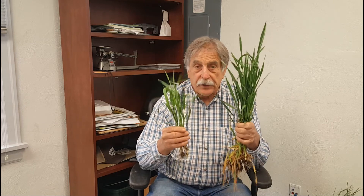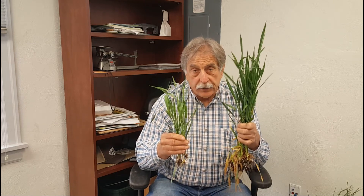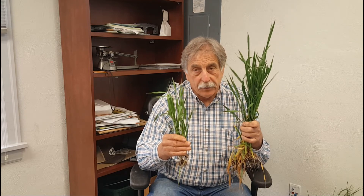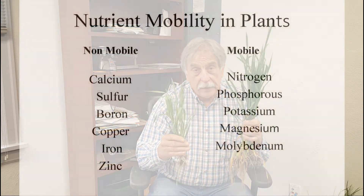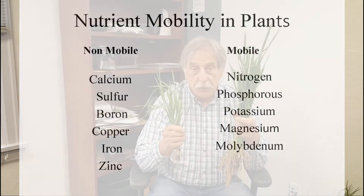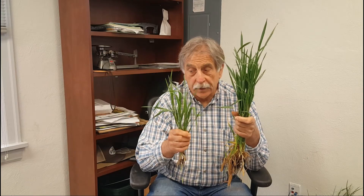The other issue to think about is that some nutrients in the plant are mobile and some are immobile. Mobile nutrients like phosphorus, potassium, and sulfur tend to have higher concentrations in the young leaves. Immobile nutrients like iron have concentrations that are usually a little higher in the older leaves. So depending on which nutrient you're interested in, you need to know whether it's a mobile or an immobile nutrient.